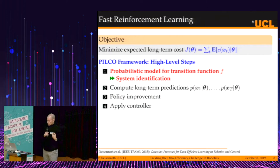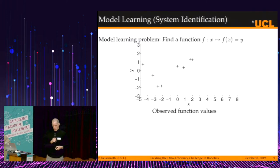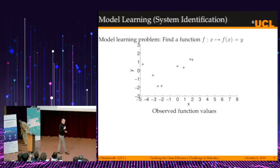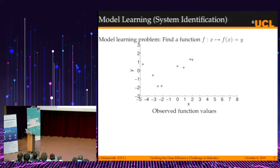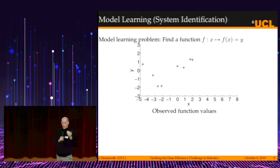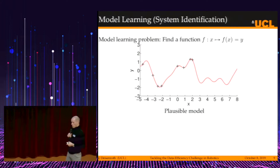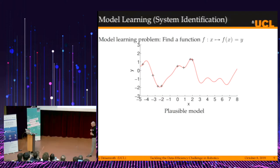Learning a transition function is effectively solving a regression problem. Assume we have inputs x and observations y, and for the sake of illustration these observations are noise-free. To solve this regression problem, we need to find a function that connects all of these observations. Here is a plausible model that solves our problem. But the challenging part in reinforcement learning is that we are not really done with modeling — we want to use this model to make predictions, and based on those predictions, make decisions.